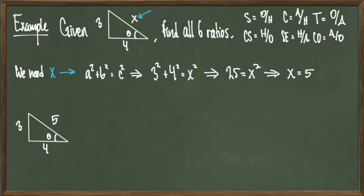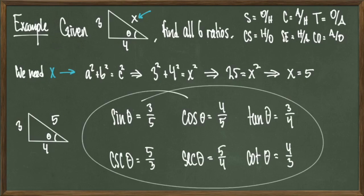So I can rewrite my triangle below and start computing these trig ratios. Remember all six of these ratios are computed with respect to our angle theta. Just by using the definitions, I can write all six ratios. Sine of theta is 3 over 5, cosine of theta is 4 over 5, tangent of theta is 3 over 4, cosecant theta is 5 over 3, secant theta is 5 over 4, and cotangent theta is 4 over 3.